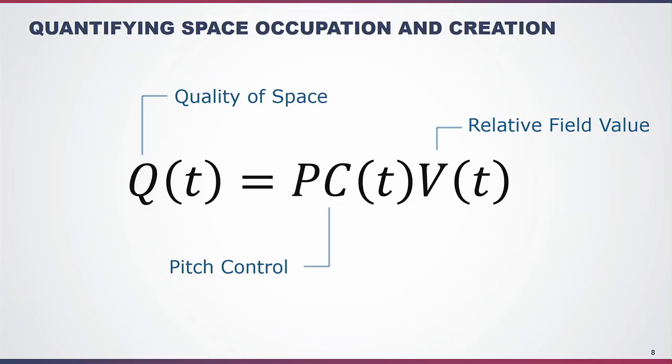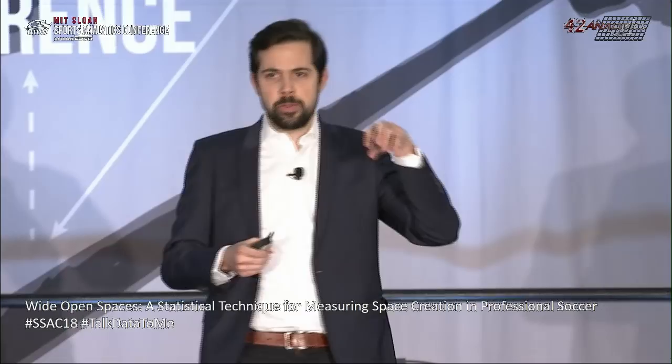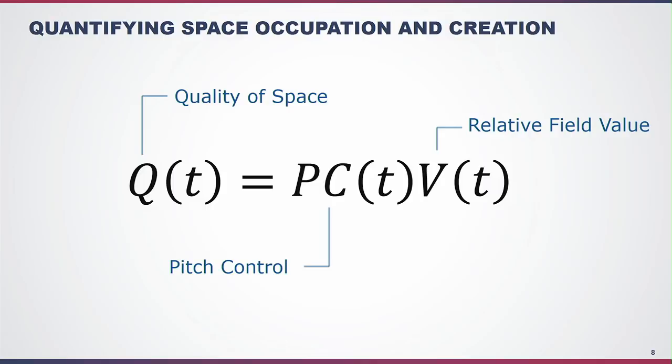There's an underlying concept here — the quality of space. If we're trying to gain space, there's a question of how valuable is the space and control in a given moment. We can express the quality of space as a function of two concepts: first, pitch control — the level of control you have at a certain location in a given moment; and second, relative field value — how valuable is the space you're controlling at that moment.